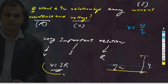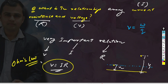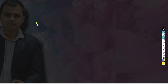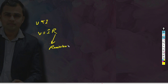So more or less the concept is V equal to IR, which is Ohm's law. Ohm's law means I is directly proportional to V. When we remove the proportional sign, the constant is considered the resistance of the conductor.